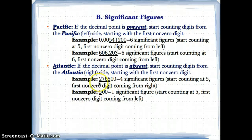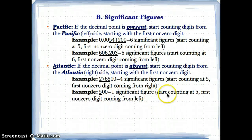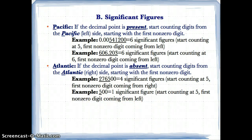The next example is 500. Going from right to left, we ignore the two trailing zeros since they are zeros, not non-zero digits. We start counting at the five, which is the only non-zero digit, so we stop there. This gives one significant figure — it's the first and only non-zero digit coming from the right.